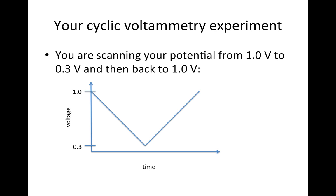In cyclic voltammetry, the potential that you're applying to a working electrode is not constant. It changes as a function of time. So you're scanning from one volt down to 0.3, and then you're reversing the scan and scanning back up all the way to one volt. You're going to do this at different scan speeds — maybe this whole cycle takes 10 seconds, or maybe a hundred seconds, depending on the scan speed.